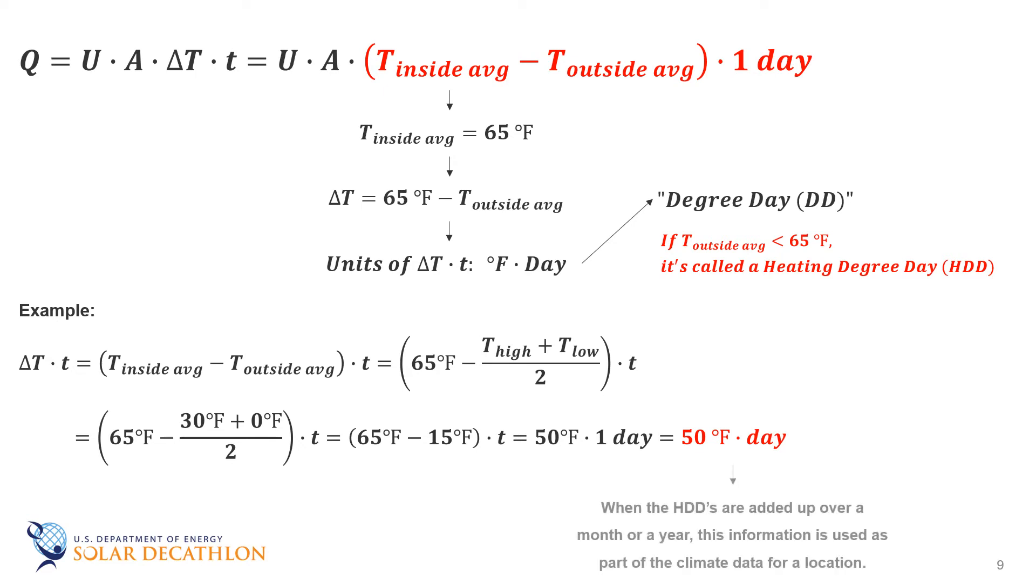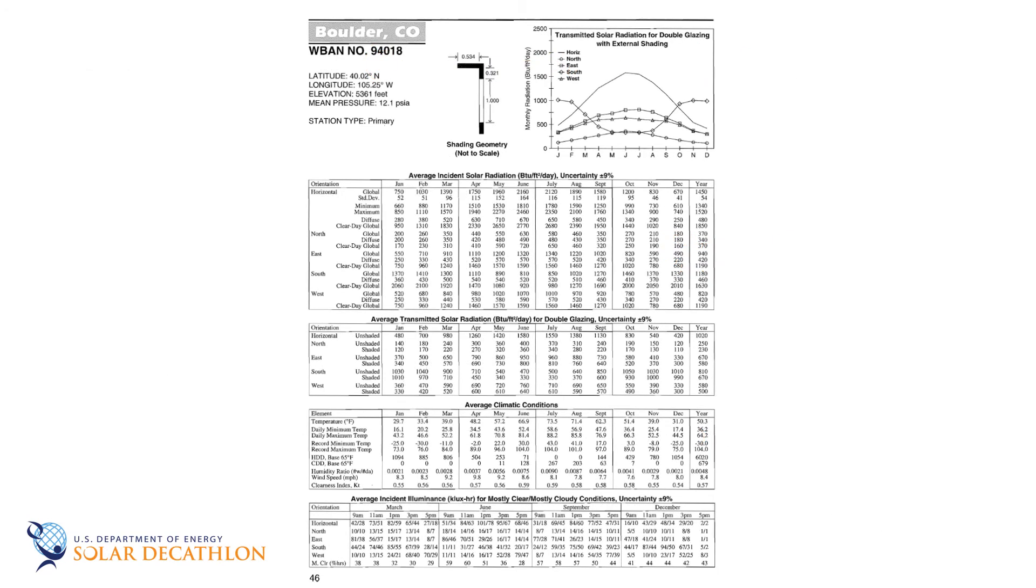We can add up degree days for a month or even a year and report that information as part of climate data. Many energy efficiency building codes use heating degree days as the basis for climate zones and for determining the minimum level of energy efficiency requirements for heating and cooling equipment. The heating degree days are tabulated in a number of places with some examples provided in the reference section. While dated, the TMY-based heating degree days are located in an NREL publication. They are tabulated by location. As you can see in this example below, the information is tabulated on a monthly basis as well as an annual basis.